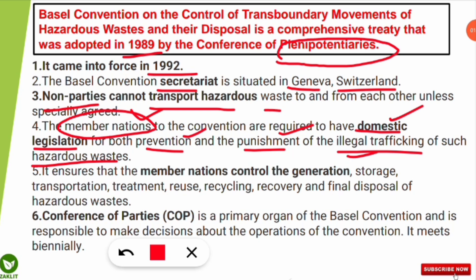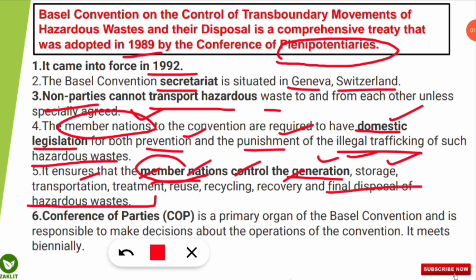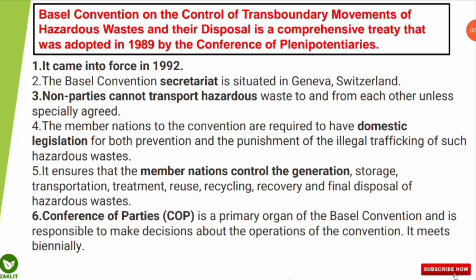The convention ensures that member nations control the generation, storage, transportation, treatment, reuse, recycling, recovery, and final disposal of hazardous waste. An important point: the Conference of Parties is the primary organ of the Basel Convention and is responsible for making decisions about its operations. It meets biennially — that is, every two years. Write down all these things as they are very important.